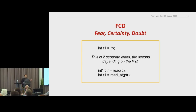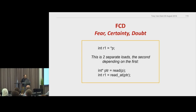How can a processor change the order of those two instructions — read the value at P before reading P itself? That makes no sense, yet processors essentially do that. They reorder those two instructions. Not many processors do that — Intel won't. Only like the DEC Alpha does things like that.